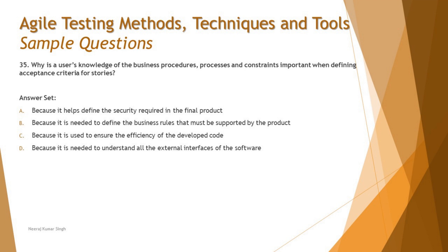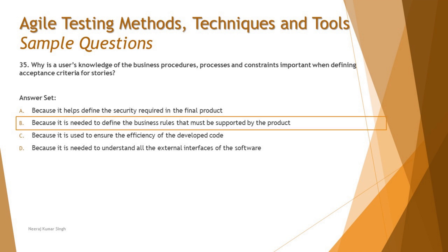Option D says: because it is needed to understand all the external interfaces of the software. External interfaces belong to other systems with their own requirements. User stories and acceptance criteria are written individually per product, not across systems. Therefore, the correct answer is B — knowing business procedures and processes is needed to define the business rules that the product must support, enabling meaningful acceptance criteria.